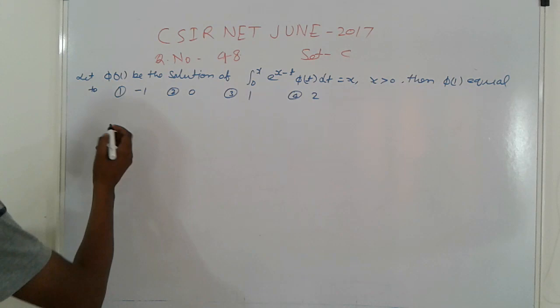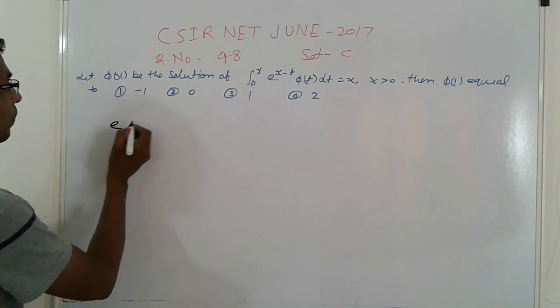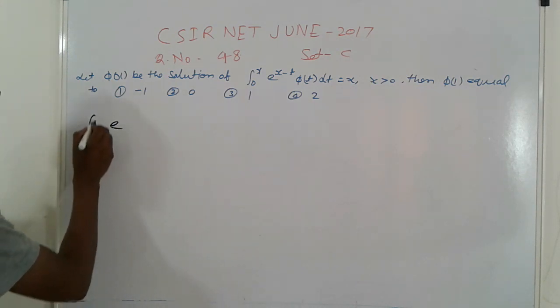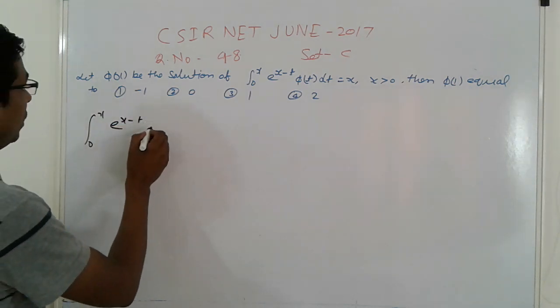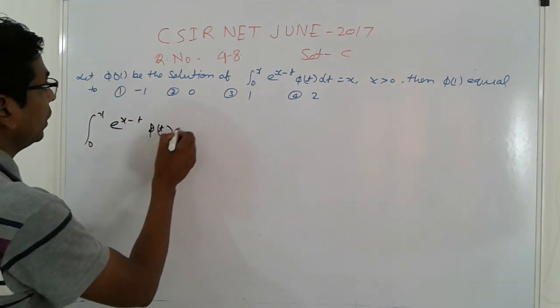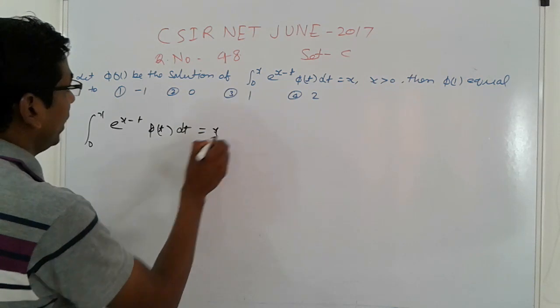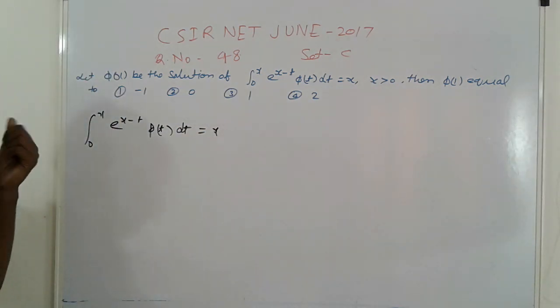First, the given equation is ∫₀ˣ e^(x-t) φ(t) dt = x. This is the first kind of solution.